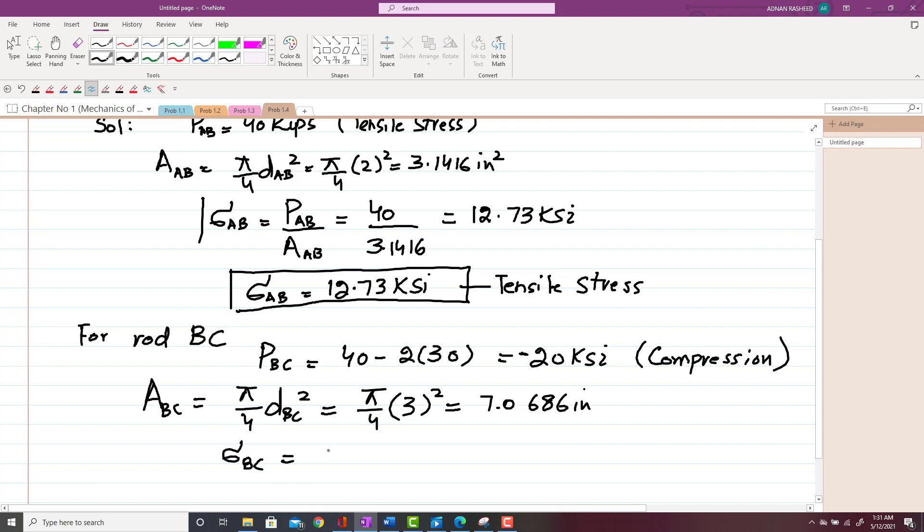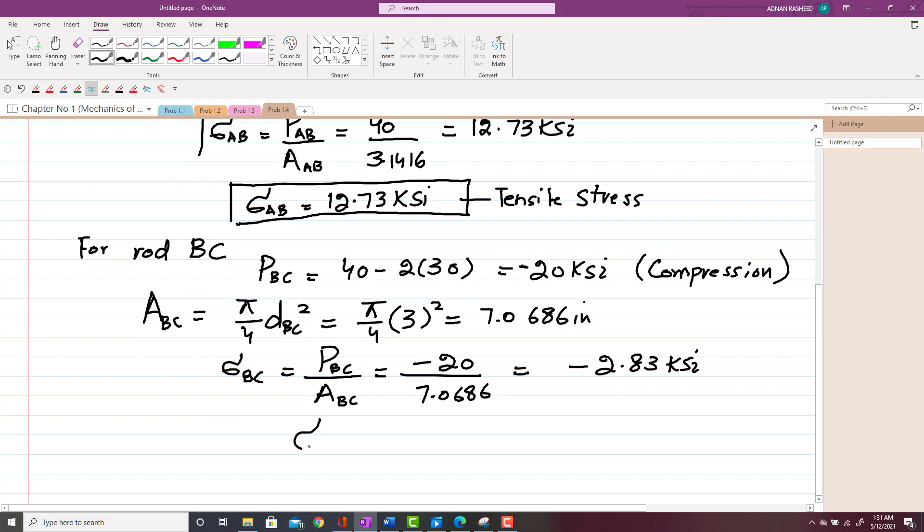Now you have to find stress in BC, which is equal to PBC over ABC, area of BC rod. Now the stress is -20, and this area is 7.0686. That will give you -2.83 KSI.